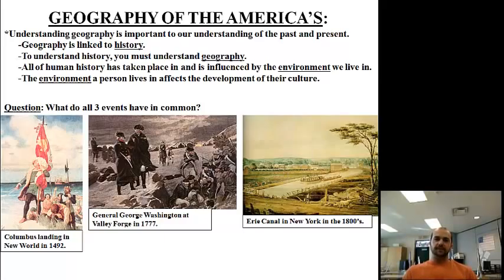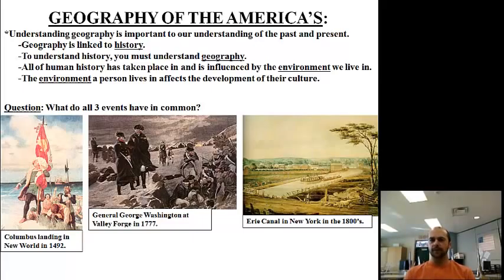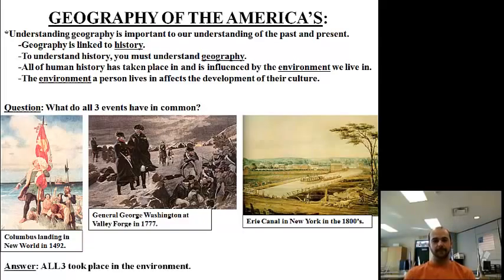There's a question here — what do all three events have in common? Take a look at these pictures: Columbus landing in the New World in 1492, General George Washington at Valley Forge in 1777, and the Erie Canal in New York in the 1800s. What do all three of these events have in common? The answer is that all three of these events took place in the environment. We'll discuss this tomorrow during class.